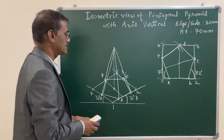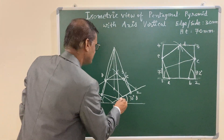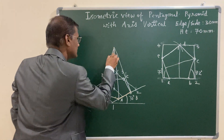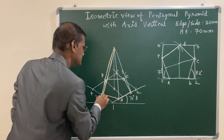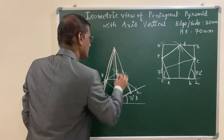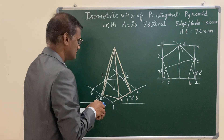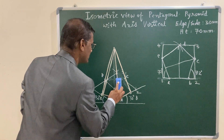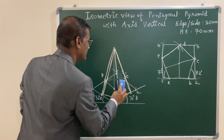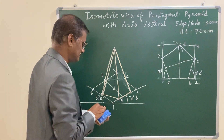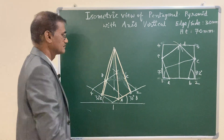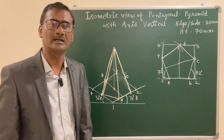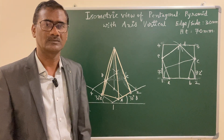After joining the apex to all base corners, use an HB pencil to highlight the visible edges and erase certain edges. These are the visible slant edges. The edges inside that are not visible — in isometric drawing it is general practice not to show hidden edges; you erase them. I think you have understood how to draw the pentagonal pyramid. Now you can start practicing. Thank you.